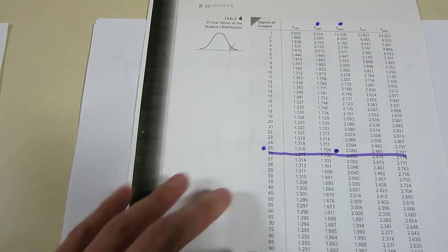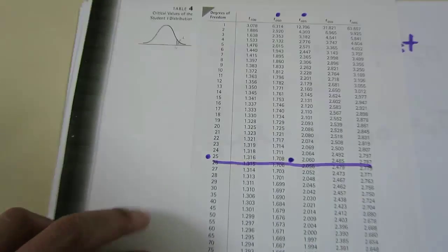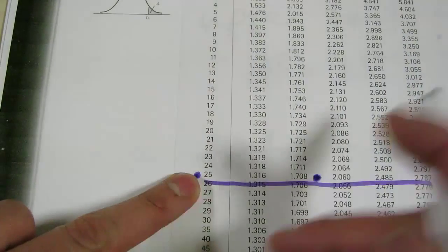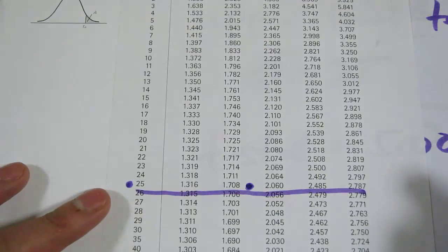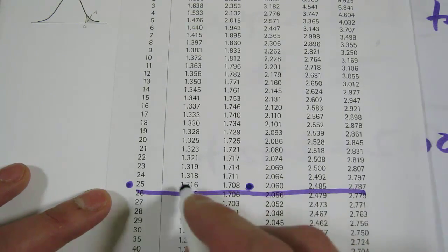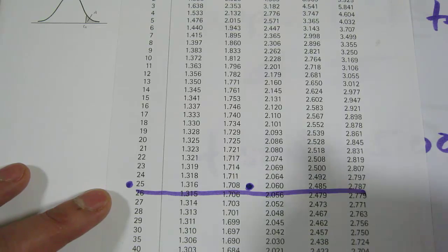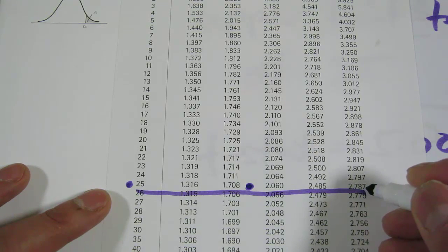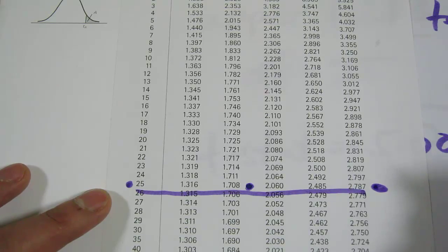Again, we look at the corresponding row, degrees of freedom equals to 25, and we look for our t-statistic, which is 5. Now, where does 5 lie within these intervals? Well, the biggest number here is 2.787. 5 is above that, so it's to the right.